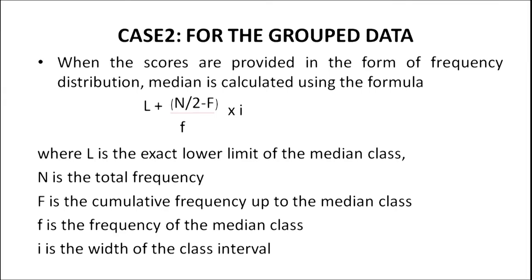Median for grouped data: when scores are provided in the form of a frequency distribution, median is calculated using the formula: Median = L + [(N/2 − F) / f] × I, where L is the exact lower limit of the median class, N is the total frequency, F is the cumulative frequency up to the median class, f is the frequency of the median class, and I is the width of the class interval.